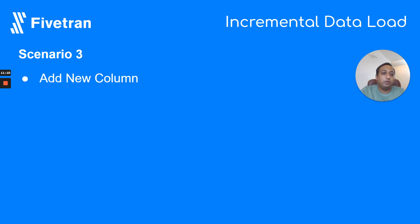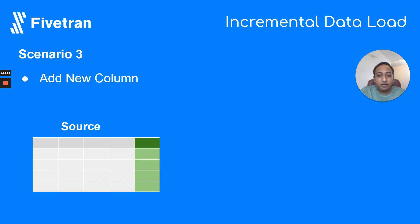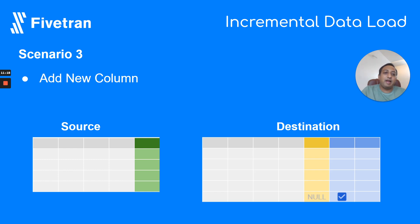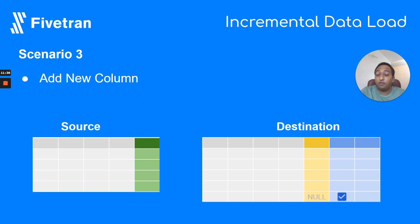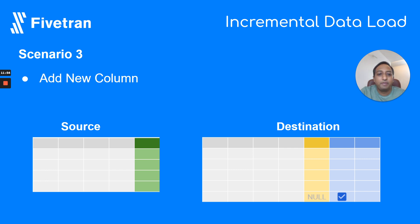Now let's say we are adding a new column — this is a schema-level change. In case of adding a new column, Fivetran adds the new column exactly as defined in your source. Note that for any rows that were previously deleted (where Fivetran deleted is true), the value in the new column becomes null, since that data does not exist at the source.